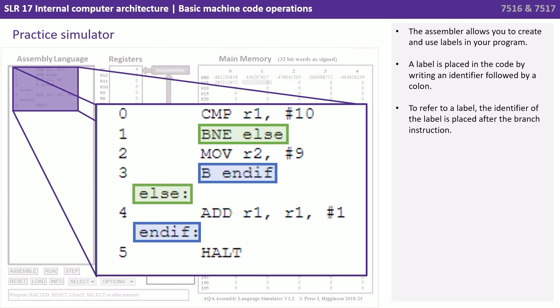The assembler allows you to create and use labels in your program. A label is placed in the code by writing an identifier followed by a colon. To refer to a label, the identifier of the label is placed after the branching instruction.